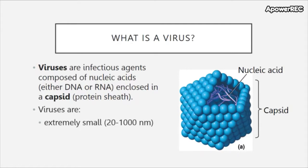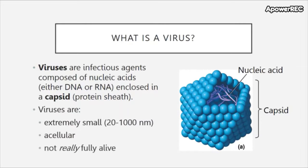Viruses are typically in the range of 20 to 1,000 nanometers. Recall that 1,000 nanometers equals 1 micrometer, and the average bacterial size is somewhere between 1 and 3 micrometers. So there are viruses that are several orders of magnitude smaller than bacteria, and therefore they cannot be observed under a light microscope. They are acellular, and because of this they are not really fully alive.